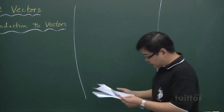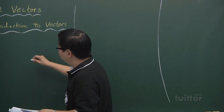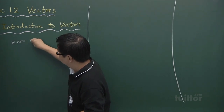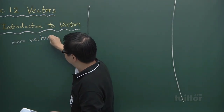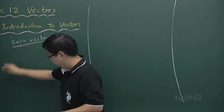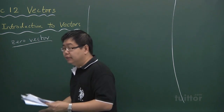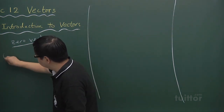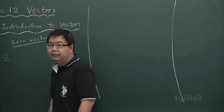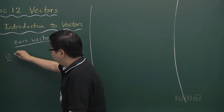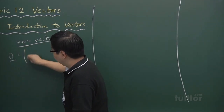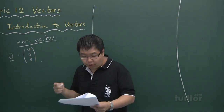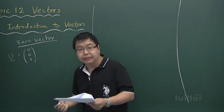The next concept is the zero vector. The zero vector is denoted by zero with a tilde below, and is given by the components (0, 0, 0). This means it is actually the origin.